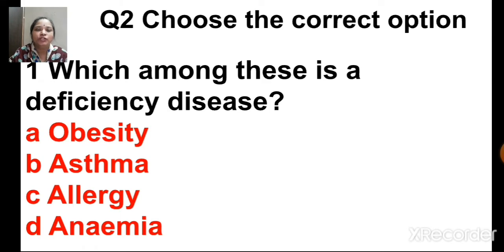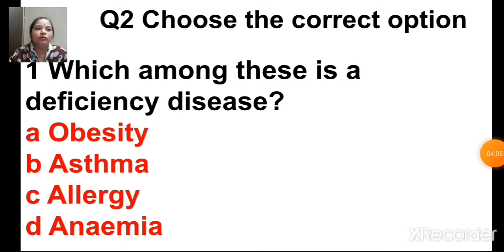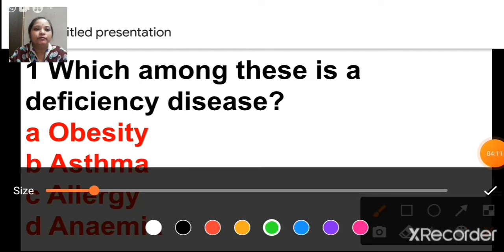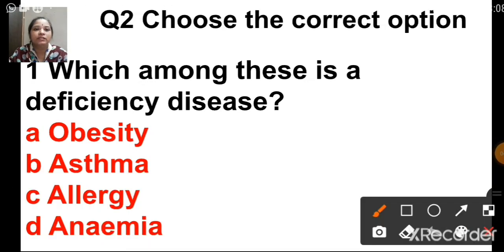The next question is choose the correct option: which among these is a deficiency disease? The options are obesity, asthma, allergy and anemia. The answer is D — anemia.